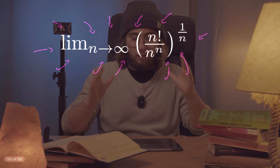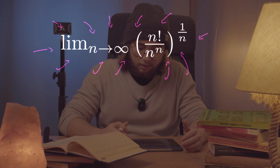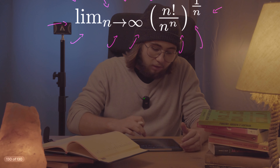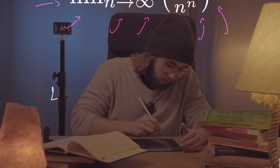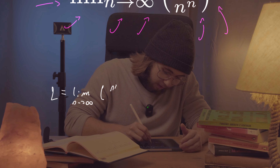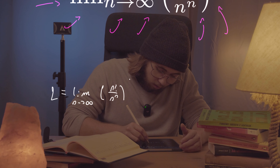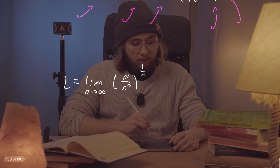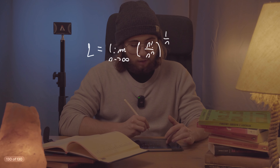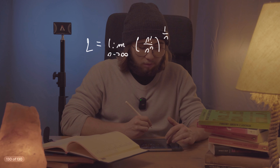What method would I propose? First of all, I'll denote this limit as L. So L will be equal to the limit as n approaches infinity of n factorial over n to the power of n, all to the power of one over n.